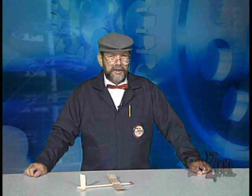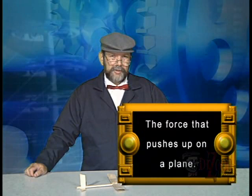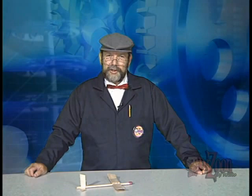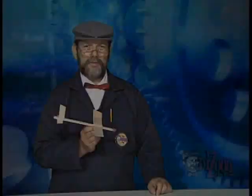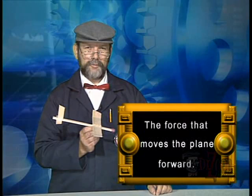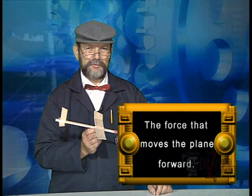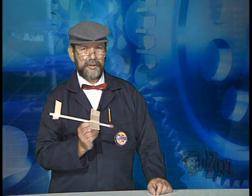The weight of an airplane is counterbalanced by a force called lift. Lift is a force that pushes up on a plane — it acts in the opposite direction than the weight. The wings of an airplane produce lift as they cut through the air. Thrust is a force that moves the plane forward. On most airplanes, propellers or jet engines produce thrust. In the case of our glider, thrust is produced by us throwing the plane into the air.